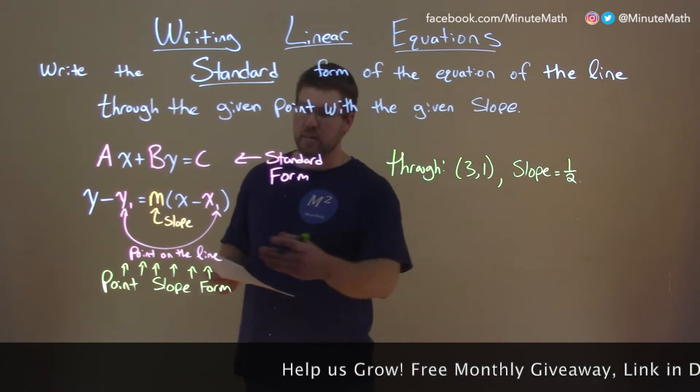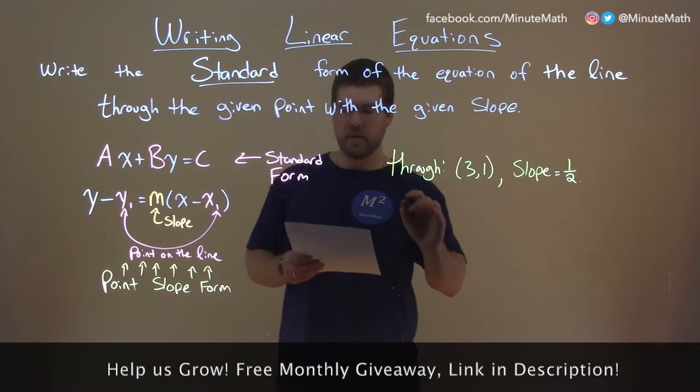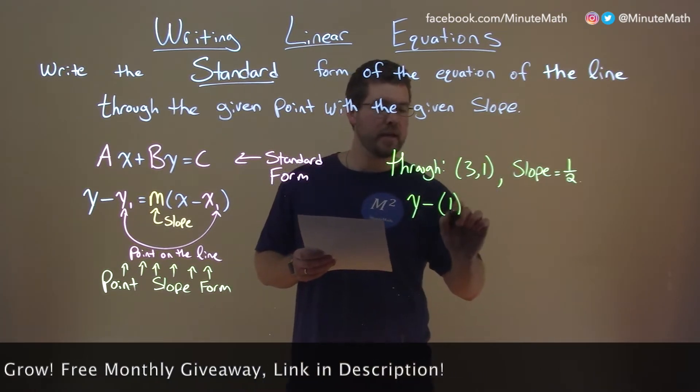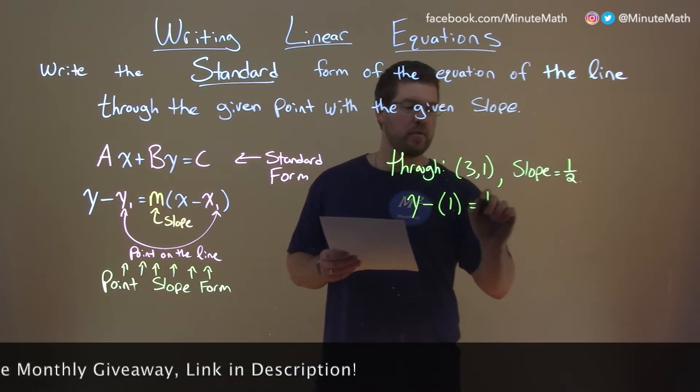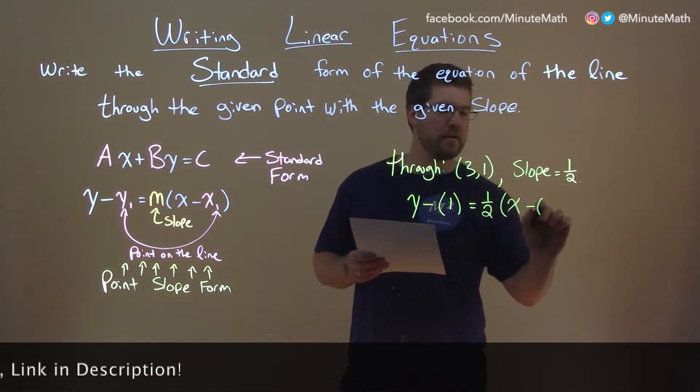First step is actually using point-slope form. Let's use this to write point-slope form: y minus y₁, which is 1 here, equals our slope 1/2 times x minus x₁, which is 3.